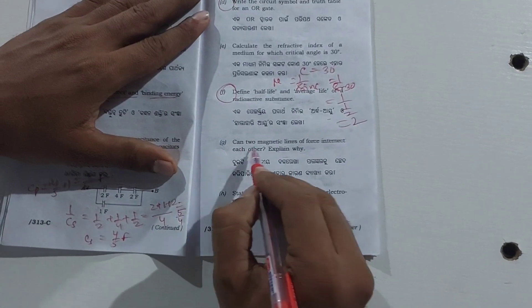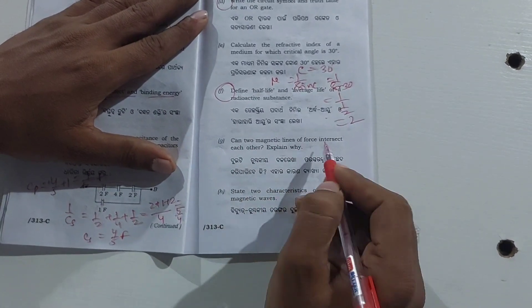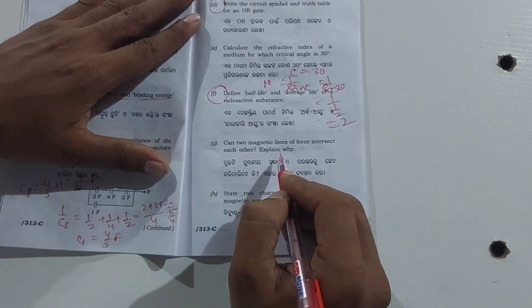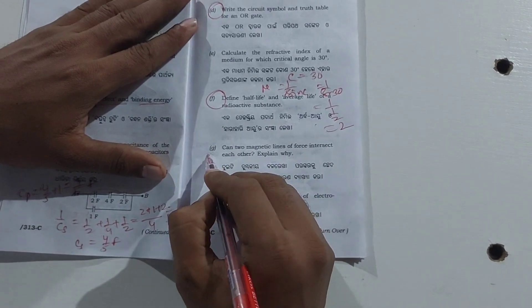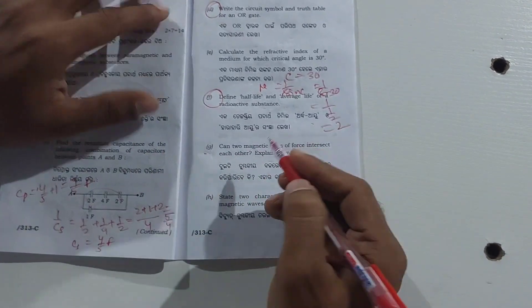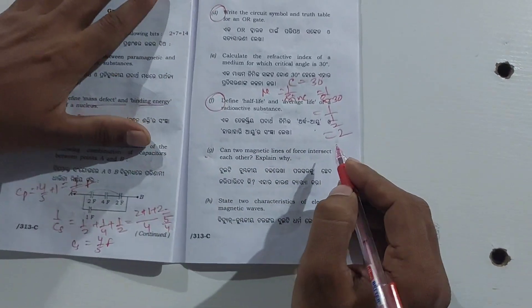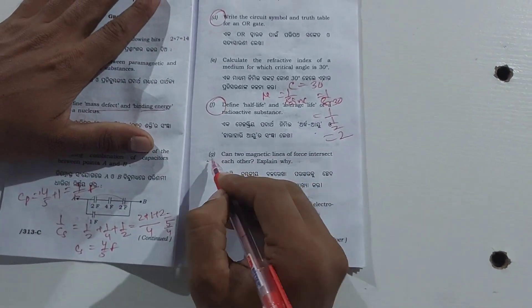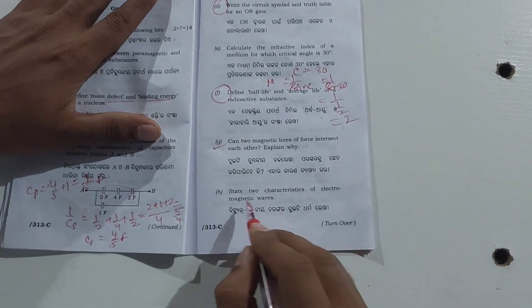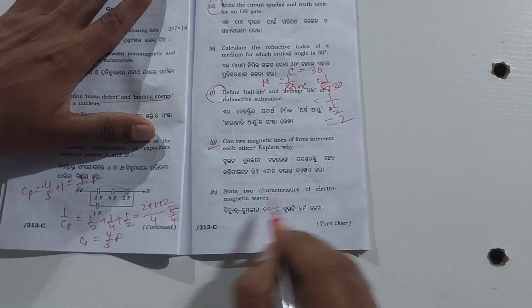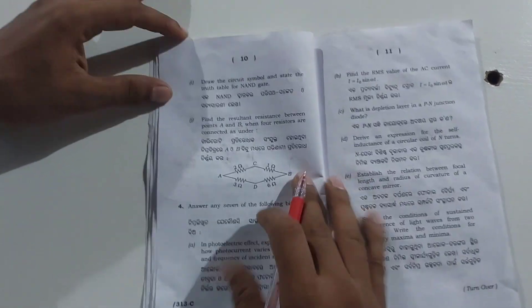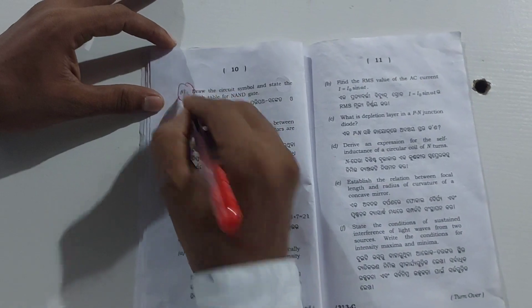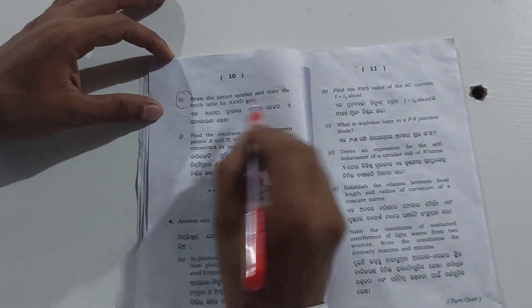Magnetic field lines do not intersect each other. At any given point, the tangent drawn to the field line gives the direction of the magnetic field at that point. You should draw the circuit symbol of the NOR gate and know its properties.